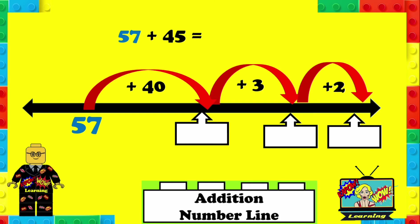See if you can do this one. So 57 plus 45. You can pause this and then play it. So 57 plus the 40 is 97, and we're going to add 3 from the 5 because that takes us to 100.